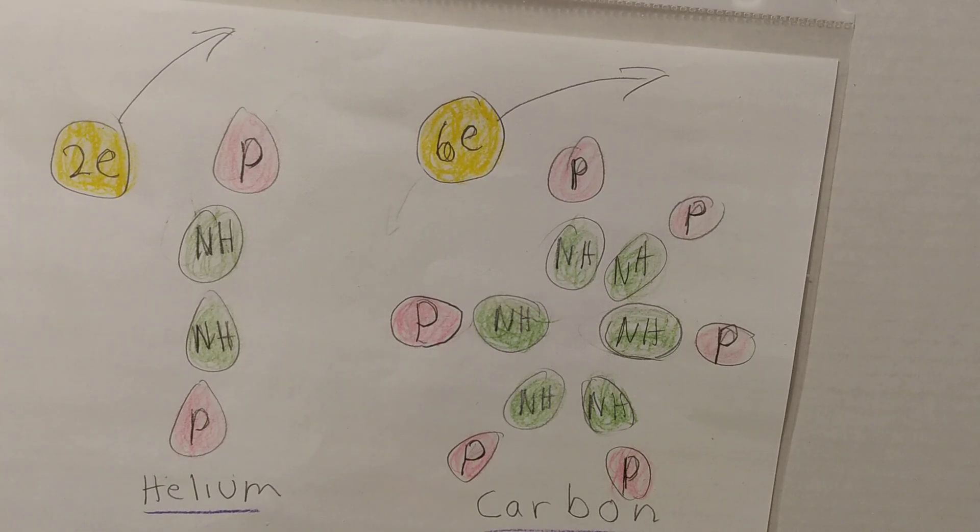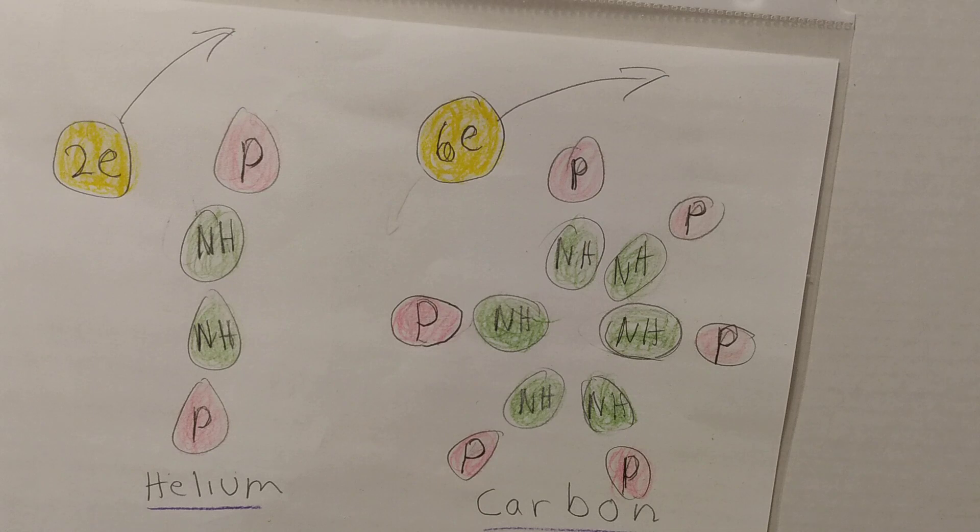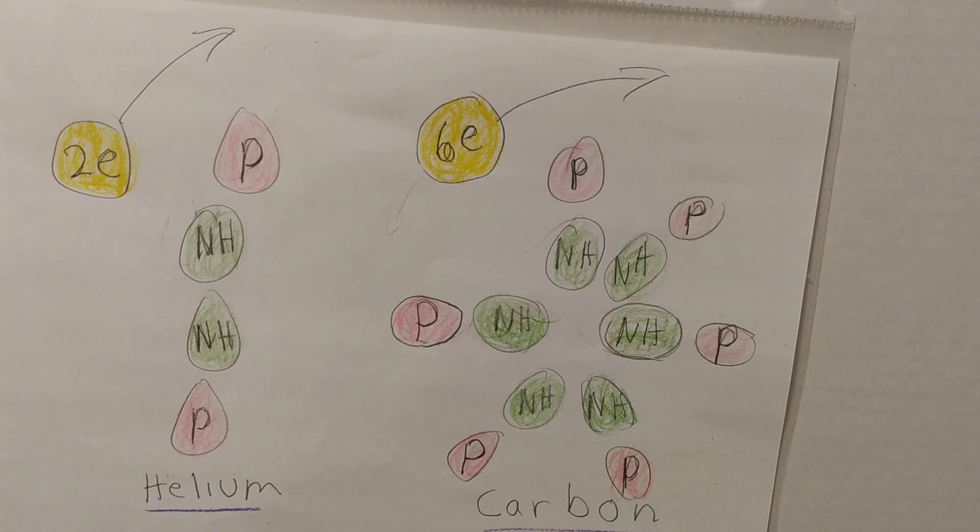Next, we see that some of the most common elements have two or more paired neutrons and protons, or a helium-like configuration inside the nucleus. The neutron may be the key to the nucleus.